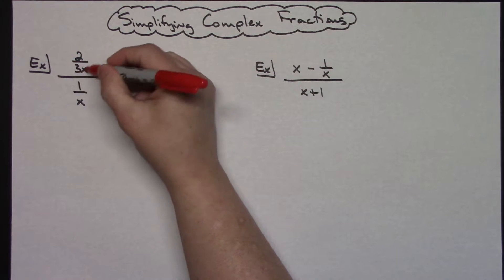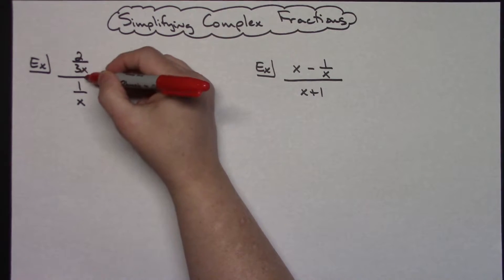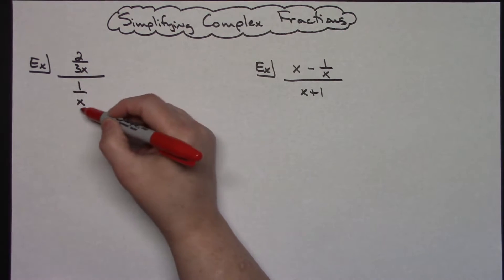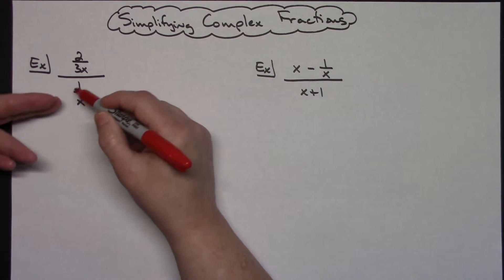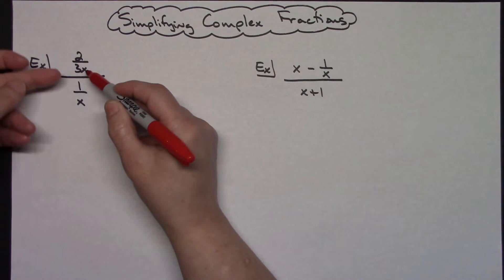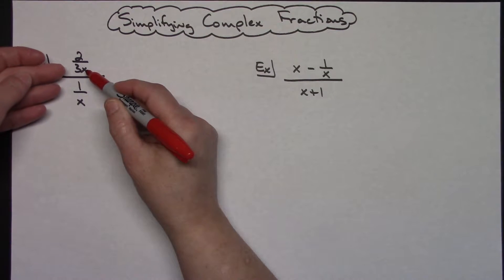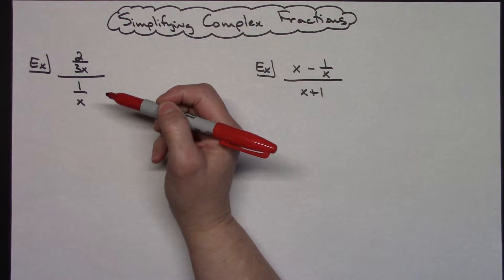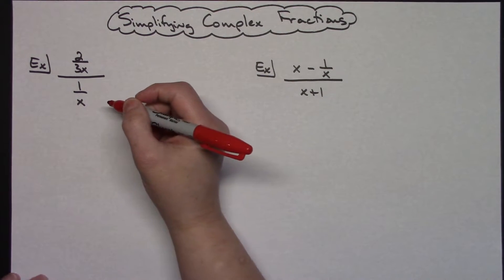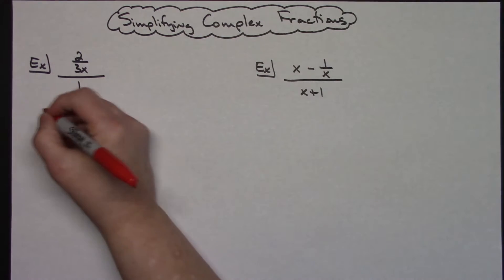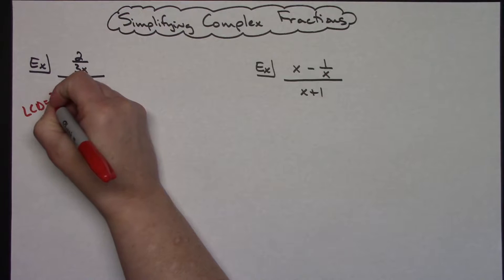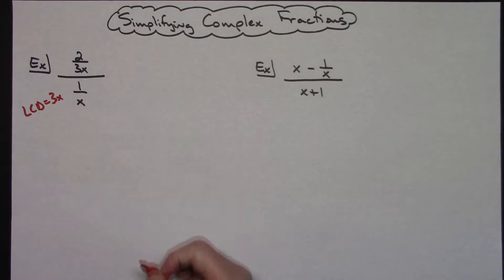So in this numerator, this fraction right here, the denominator is 3x. Down here in this denominator, this fraction's denominator is x. So I've got to come up with the least common denominator between 3x and x. The smallest thing that both of those go into is going to be 3x. So your number one first goal is to find your least common denominator — in this case, 3x.